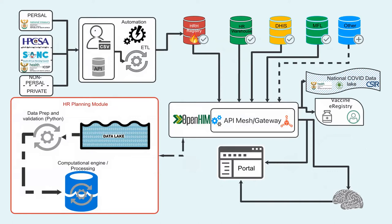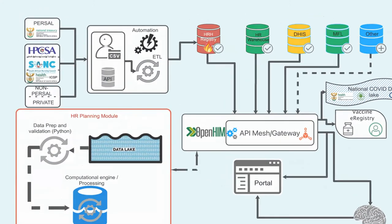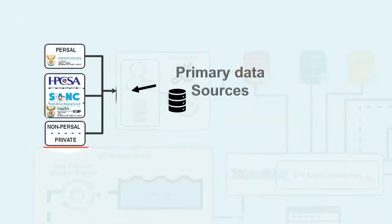Good day all. The current slide shows a simplified view of the HRIS architecture. I'll present the architecture by going through the information flow across its different components. We have inflow of data coming in from different primary data sources, which includes a government payment system with records of public sector personnel, statutory councils, and the private sector. The inflow data is basically demographic information about individual health workers.